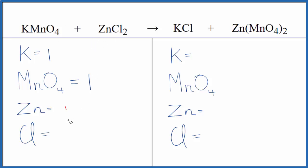We have one zinc, two chlorine atoms. Product side, one permanganate times two, so we have two of those, one zinc and one chlorine.